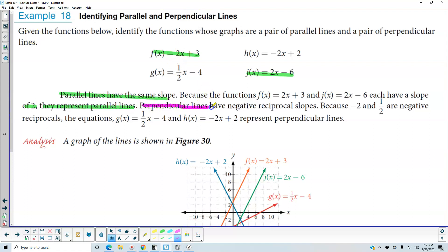Perpendicular lines have negative reciprocal slopes. Because -2 and 1/2 are negative reciprocals, which is what we have here,